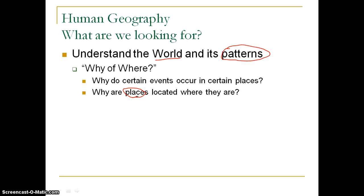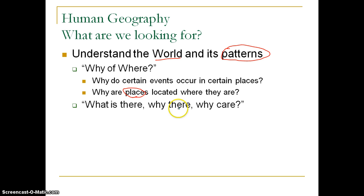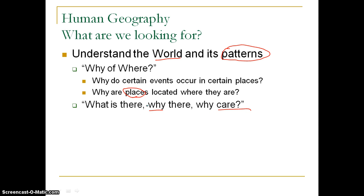This is the why of where — it's not just why do things happen, but why do they occur where they do. There's a phrase we use throughout the year: What is there? Why is it there? And then why do I care about it? First, we identify what is in a place. Then we ask why is it there. Then we ask why is it important to me.